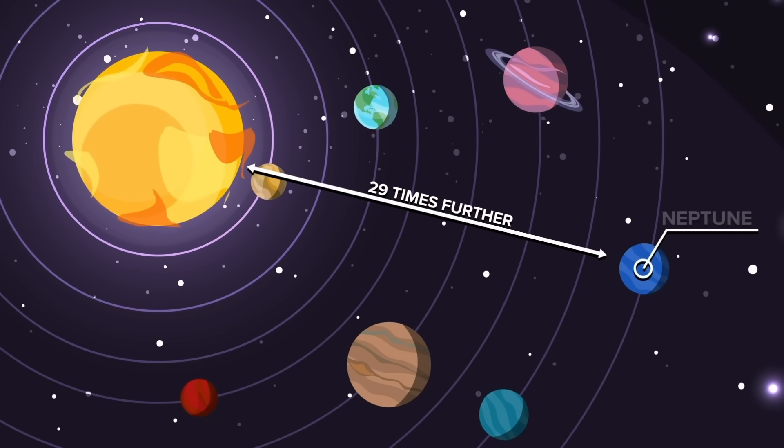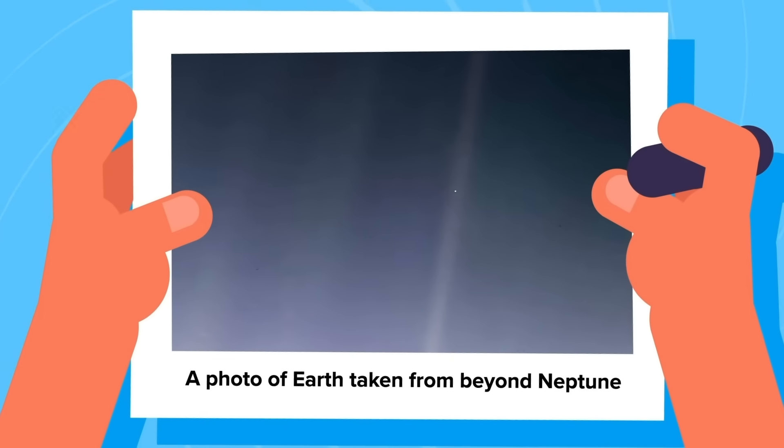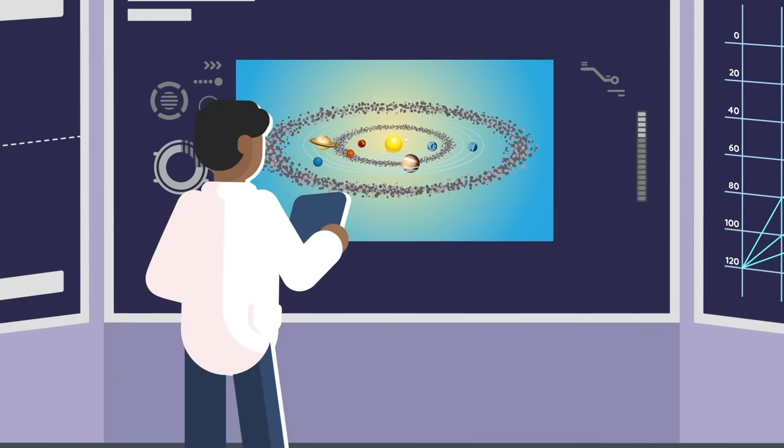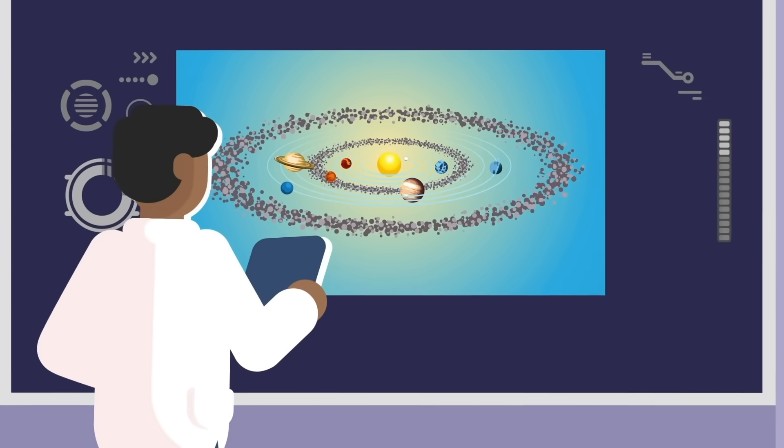Neptune orbits over 29 times further from the sun than that. For context, this is a picture of the Earth taken from out past Neptune. So good luck finding something like an alien probe in an area that vast. It's a microscopic needle in a cosmic haystack.